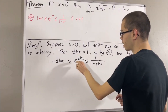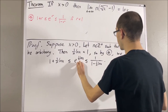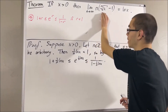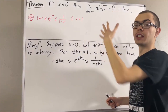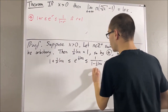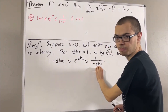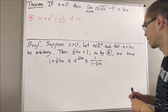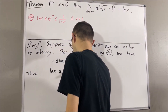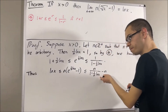We're going to modify e to the 1 over n natural log of x so that this expression becomes n times e to the 1 over n natural log of x minus 1. To do that, we subtract 1 on all three sides, then multiply n on all three sides, and we get the resulting inequality.